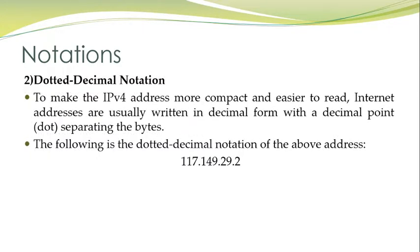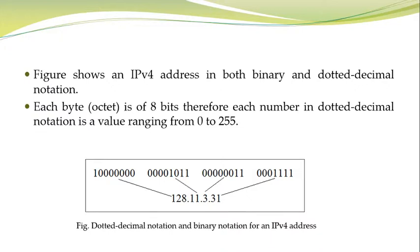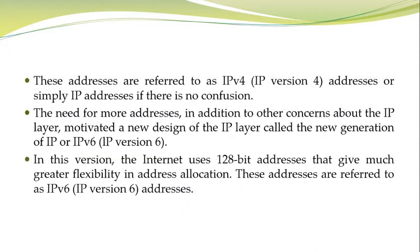Dotted decimal notation: to make the IPv4 address more compact and easier to read, internet addresses are usually written in decimal form with the decimal point separating the bytes. The following is the dotted decimal notation of the above address. The figure shows dotted decimal notation and binary notation for an IPv4 address. Each byte is 8 bits, therefore each number in dotted decimal notation is a value ranging from 0 to 255. These addresses are referred to as IPv4 addresses, or simply IP addresses if there is no confusion.